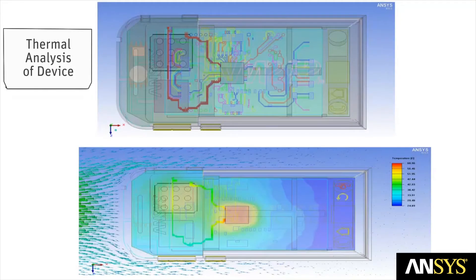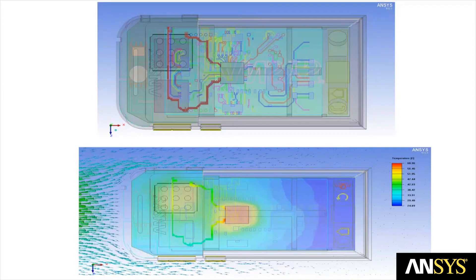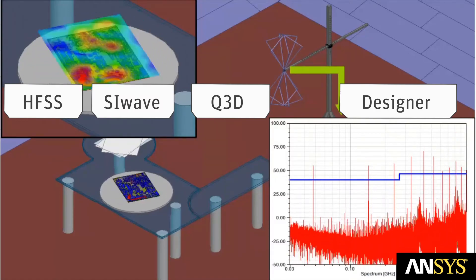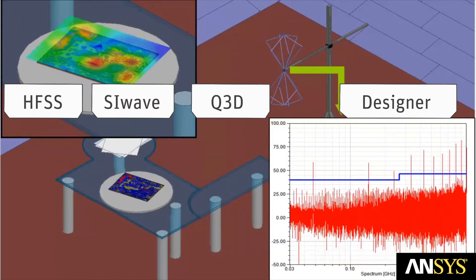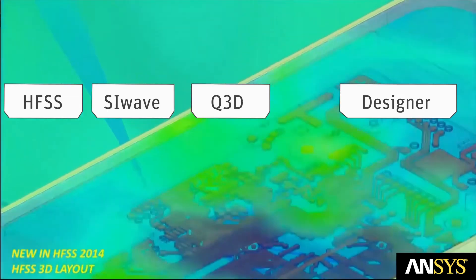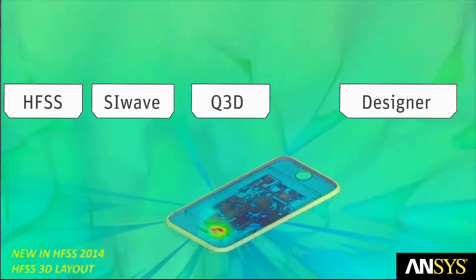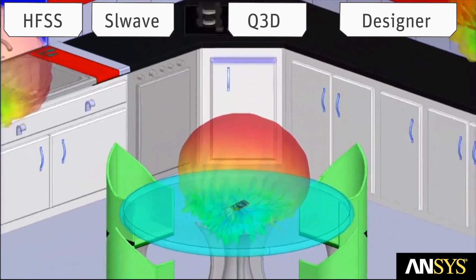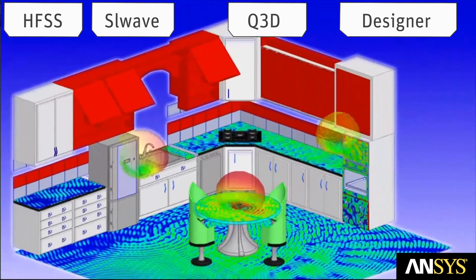Smartphones use power, and some of that power always gets converted into heat. ANSYS tools allow for a highly accurate calculation of heat generated by smartphones. ANSYS industry-leading electromagnetic tools, such as HFSS, SI-Wave, Q3D and Designer, are clearly positioned as tools of choice for the design of these modern, complex and evolving devices.